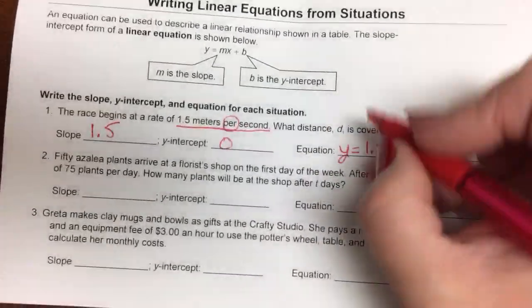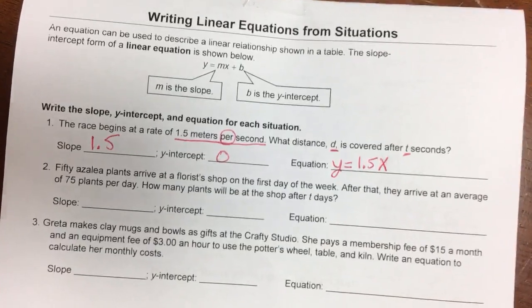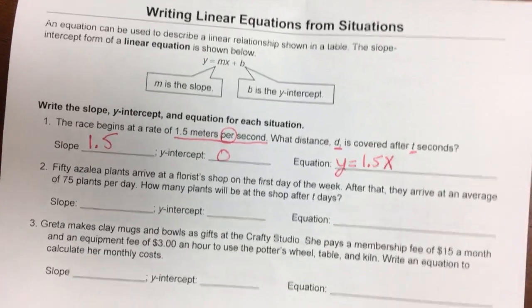But now they want it with d and t instead of y and x. So what distance is covered after t seconds?